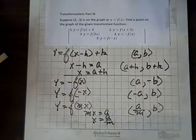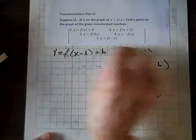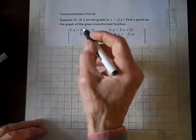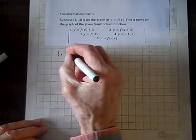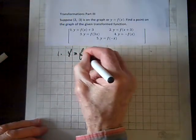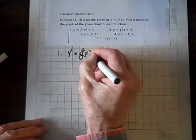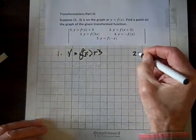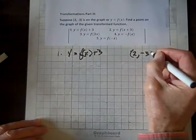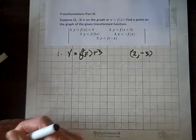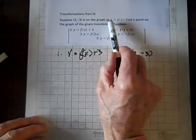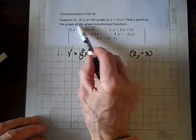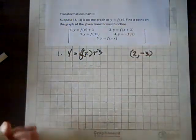Now, let's do some problems. So, the first one... y equals f of x plus 3, and our ordered pair we're starting with is 2, negative 3. By the way, I'd better read these directions. Suppose the ordered pair 2, negative 3 is on the graph of y equals f of x. Find a point on the graph of the given transformed function.